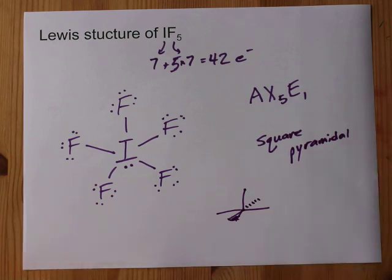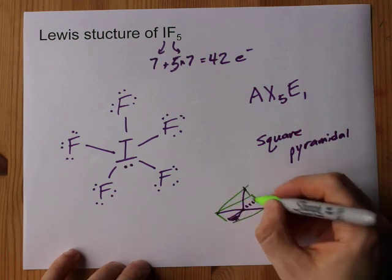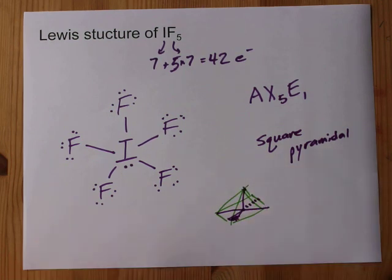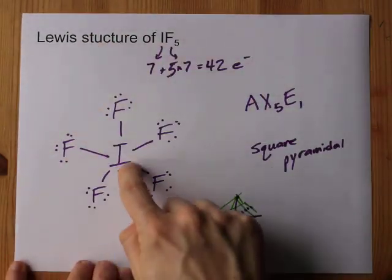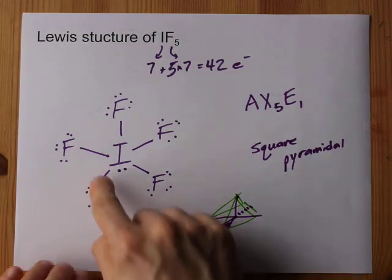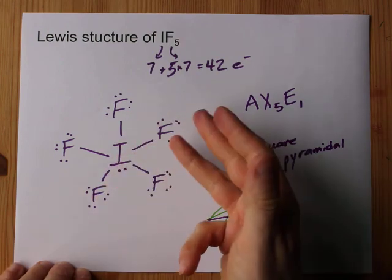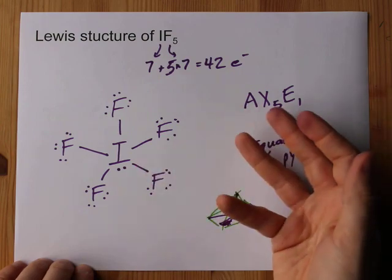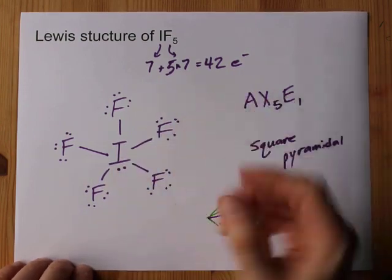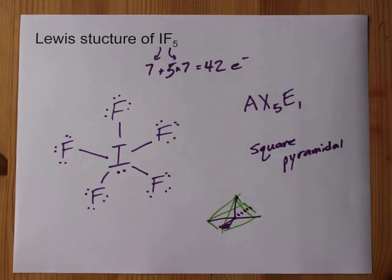See how that is a square-based pyramid? That's why it's called square pyramidal. Your Lewis structure has a lone pair on the iodine. It can have more than 8 electrons around it because it's farther into the periodic table than phosphorous. The octet rule goes out the window starting with phosphorous. Best of luck.